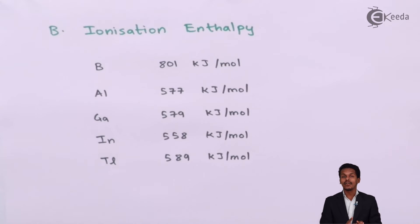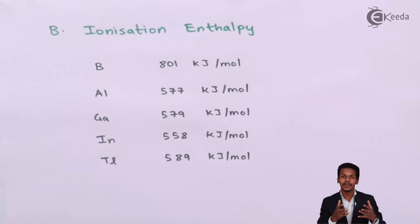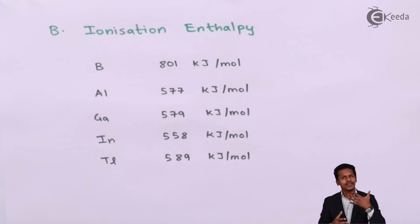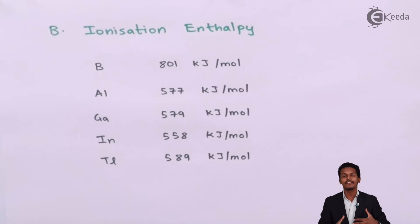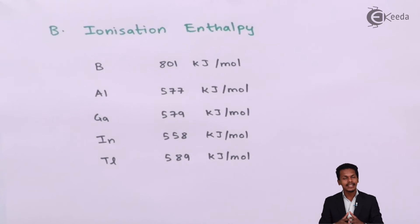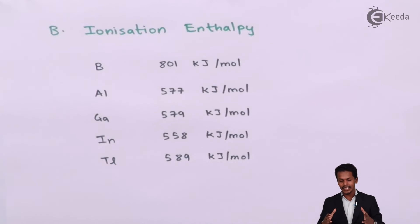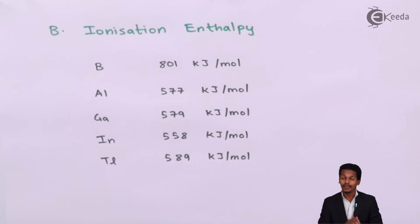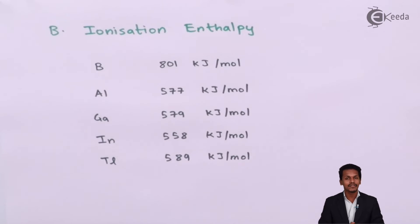The reason behind Thallium's higher ionization enthalpy is the d orbitals present below the valence shell. Because of their poor shielding effect, the nucleus has more attraction towards the outermost electron, making it very difficult to remove that electron. And that is how we observe variations in ionization enthalpy across group 13 elements.